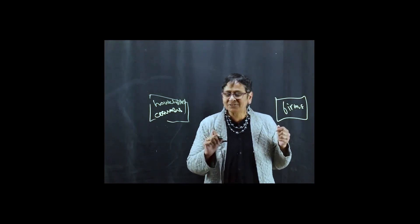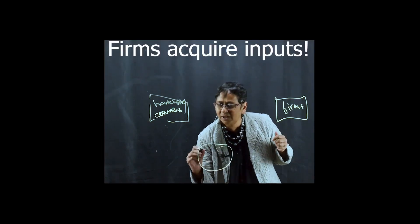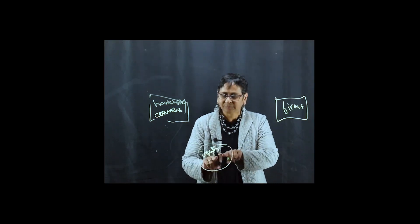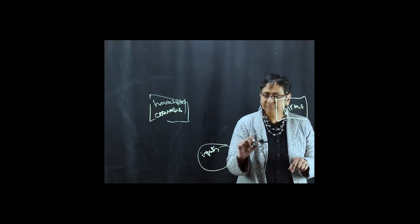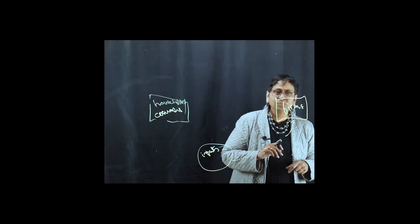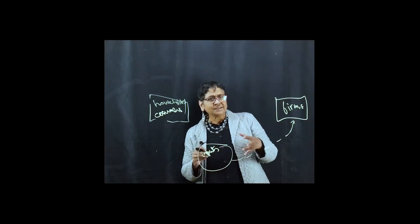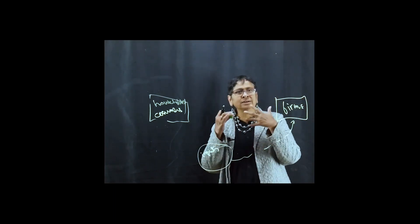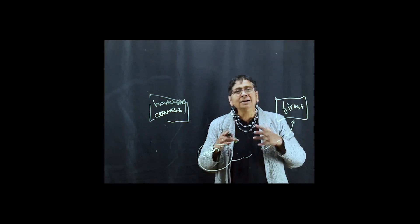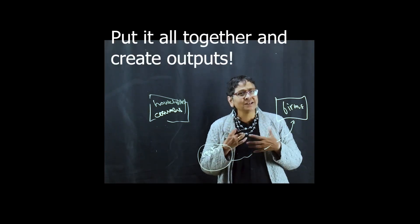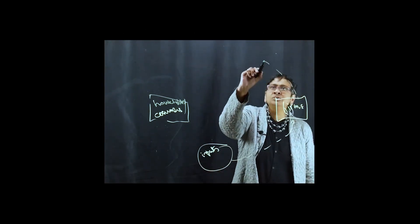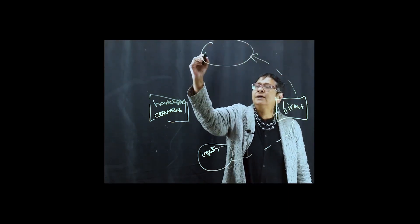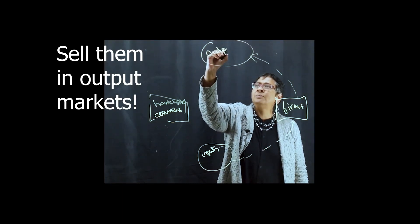So what happens in the circular flow is that firms acquire inputs from the input market, and they take these inputs and do something. They hire workers, land, labour, capital. They put it all together and create outputs, and then they take these outputs, goods and services, and sell them in output markets.